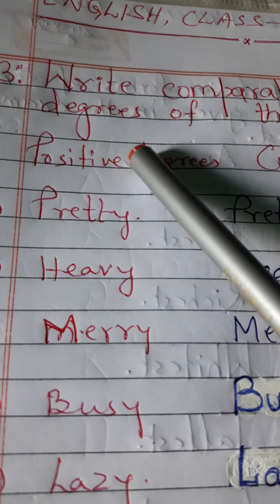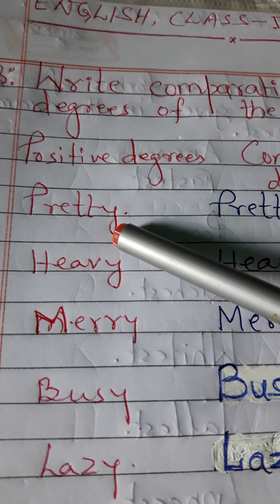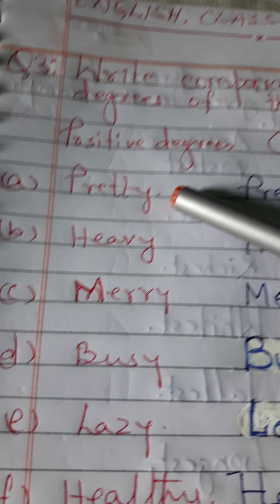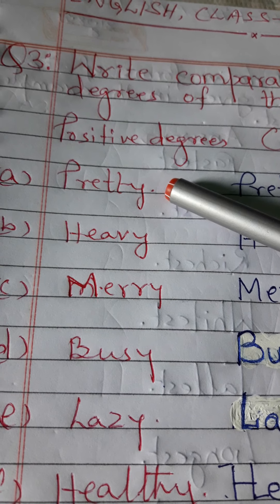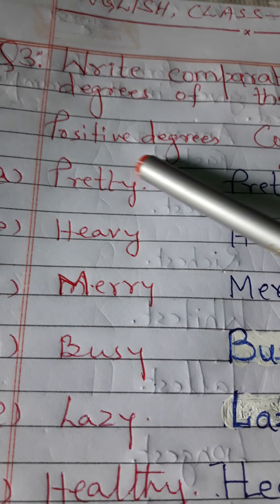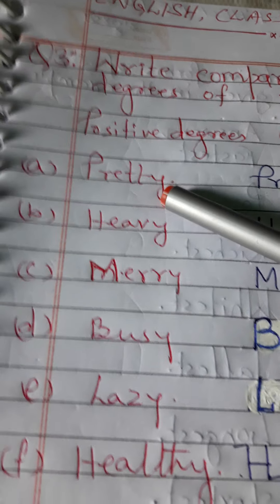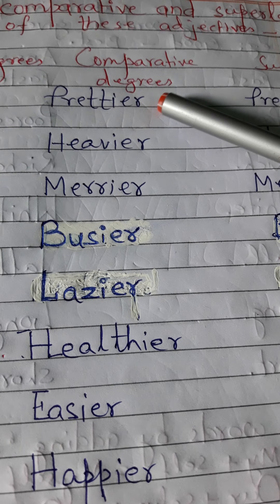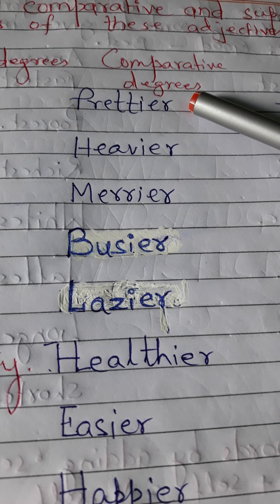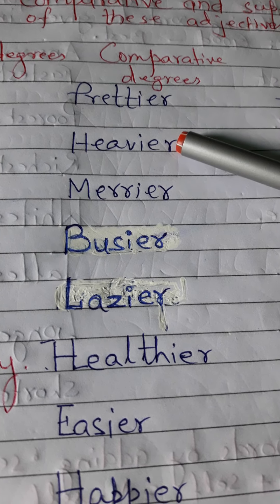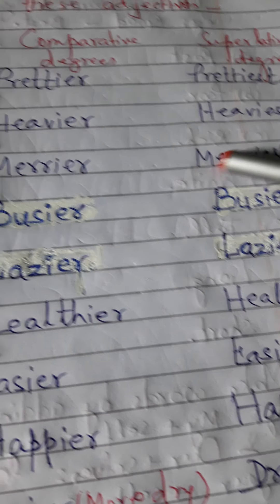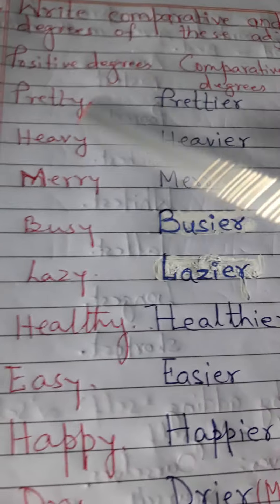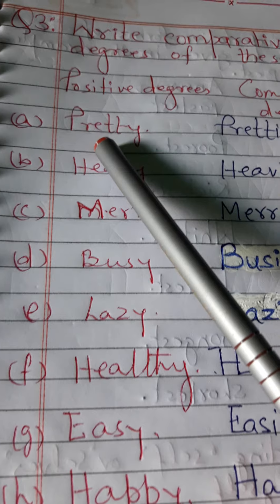So this row written in red color belongs to your positive degree, and the row having words in blue color indicates the comparative and superlative degree — that is basically your answer. Must listen and watch it accordingly.